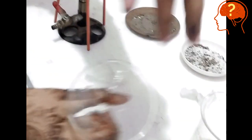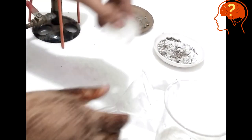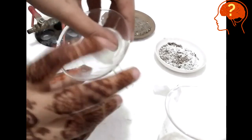Now moisten the funnel with water and make the cone of the filter paper and place that cone inside the funnel.